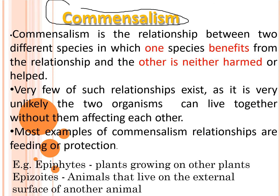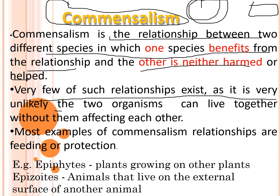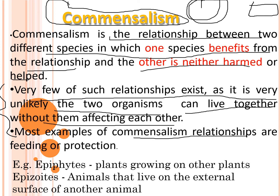Commensalism is also under positive interactions. It is the relationship between two species in which one species benefits and the other is neither harmed nor helped — the other remains in a neutral state. Very few such relationships exist, as it is very unlikely that two organisms can live together without affecting each other.